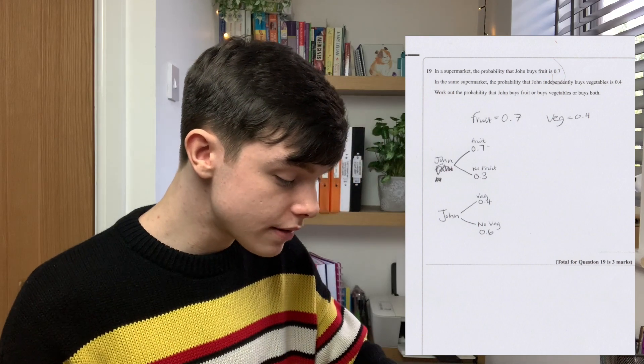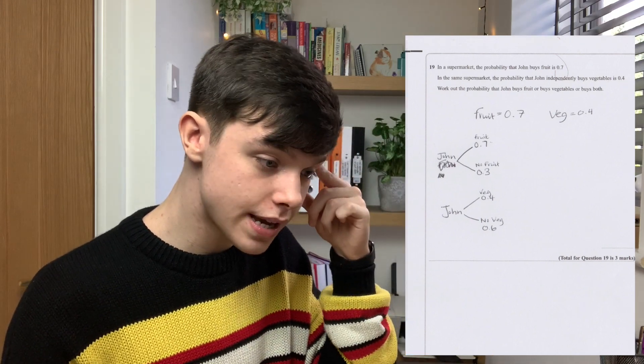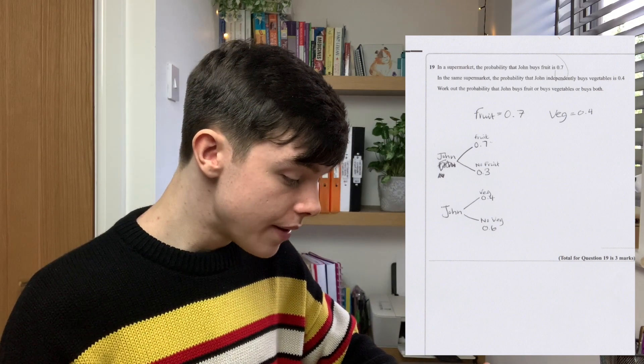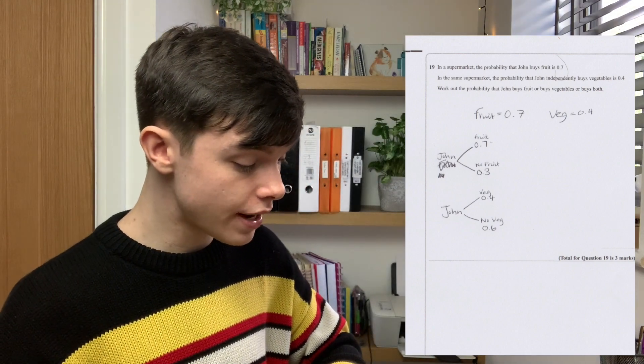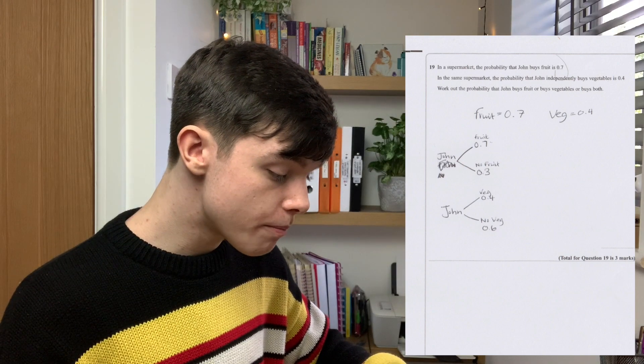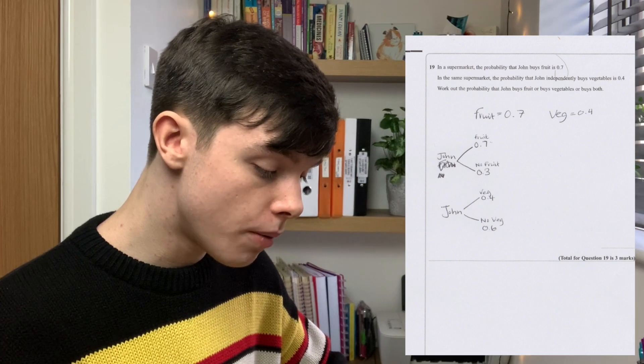It says, in a supermarket, the probability that John buys fruit is 0.7. So, we've got a nice graph going on here. In the same supermarket, the probability that John independently buys vegetables is 0.4. Work out the probability that John buys fruit or buys vegetables or buys both. I'm going to move on.